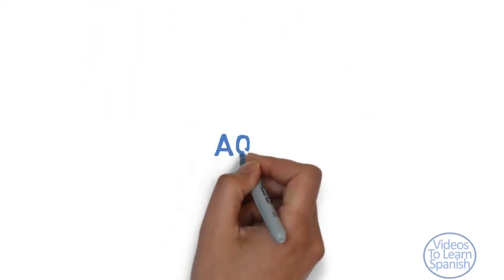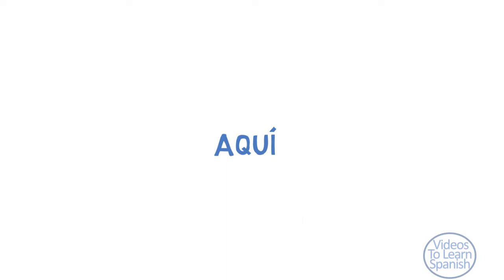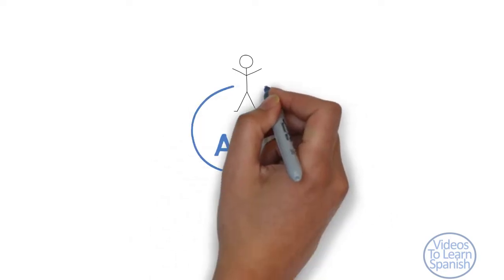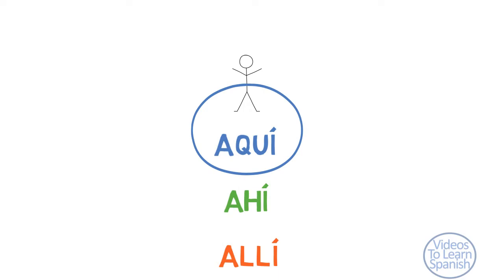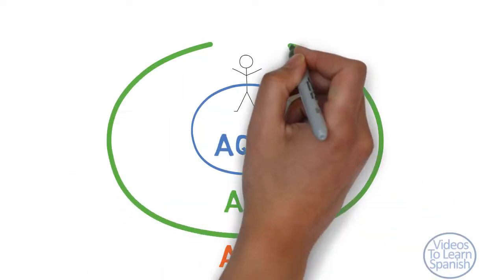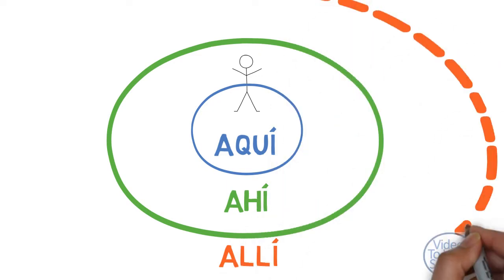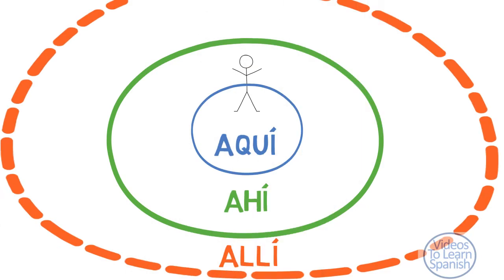In Spanish, the notion of space is divided into three concepts: aquí, ahí, and allí. Aquí, which corresponds approximately to the English 'here', refers to a space that is close to the speaker. Ahí, which is related to the English 'there', alludes to a space that is a bit farther from the speaker and often closer to the listener. Allí, which is equivalent to 'over there', refers to a space that is farther away from the speaker.